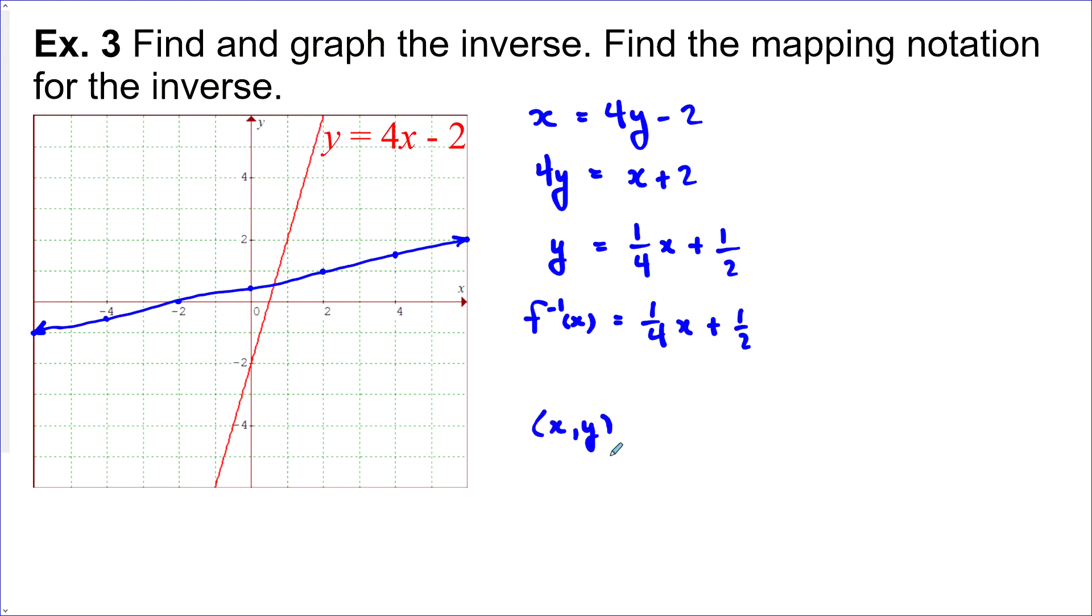Let's find the mapping notation. Every point x, y becomes y, x. And maybe that would have been easier to graph it. Say we want this point here, 1, 2 becomes 2, 1. This point here, 0, negative 2 becomes negative 2, 0. So we could have done it that way as well.